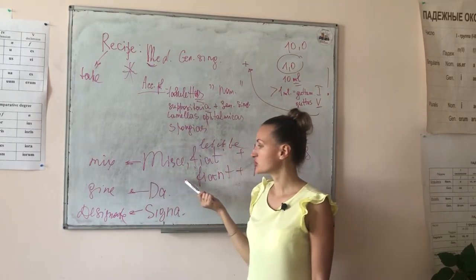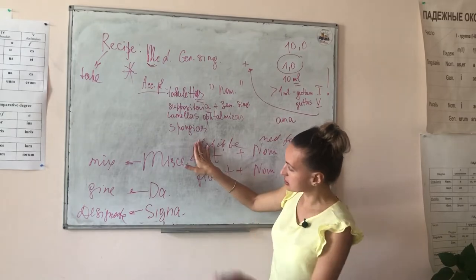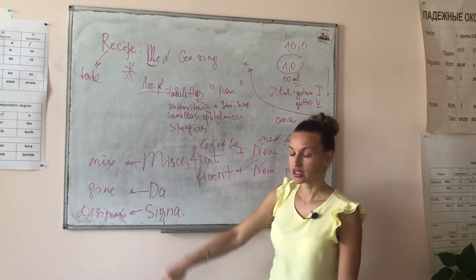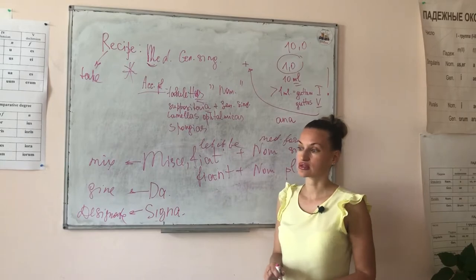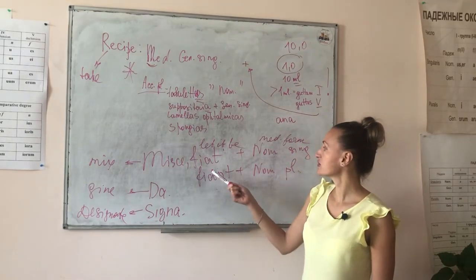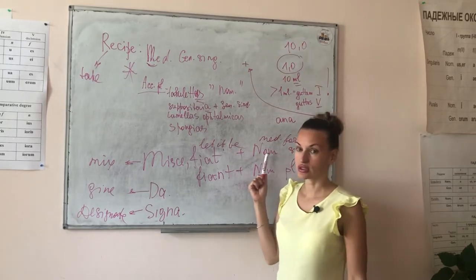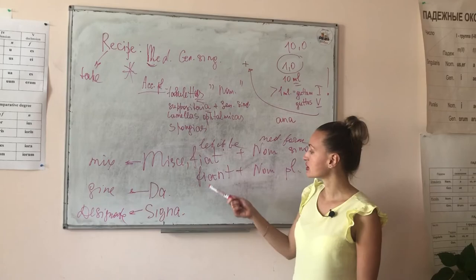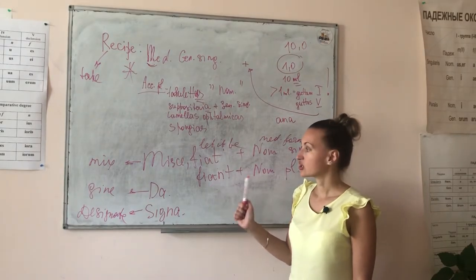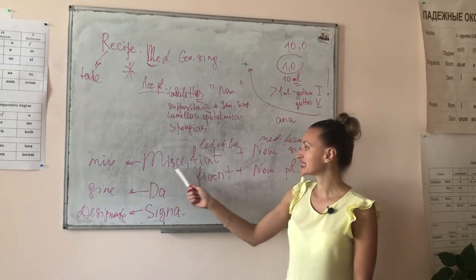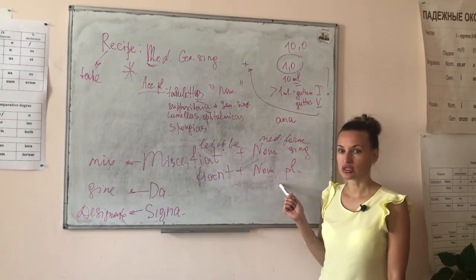The second part requires us to write what must be done with the given drugs. The first and easiest command is 'misce' — to mix. If there are a number of drugs, we show which form of the drug should be made: 'misce, fiat' and then the medicinal form in the nominative case — for example, 'pulvis' or 'unguentum.' If after 'fiat' we have a plural form, we write 'fiant.' To summarize: the singular form is 'misce, fiat' plus nominative singular; the plural form is 'misce, fiant' plus nominative plural.